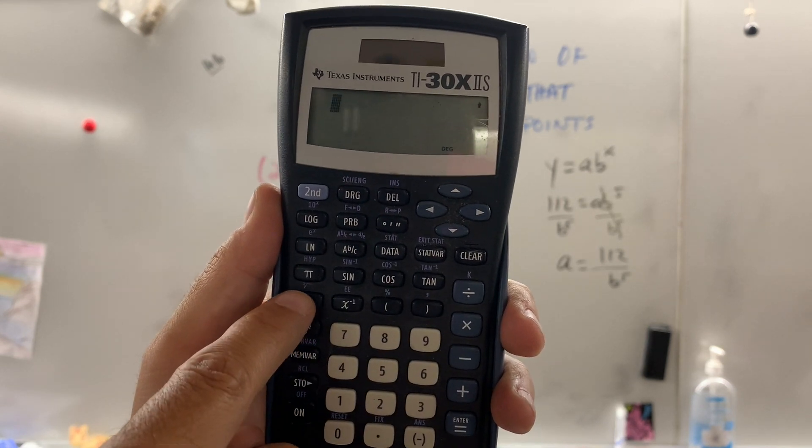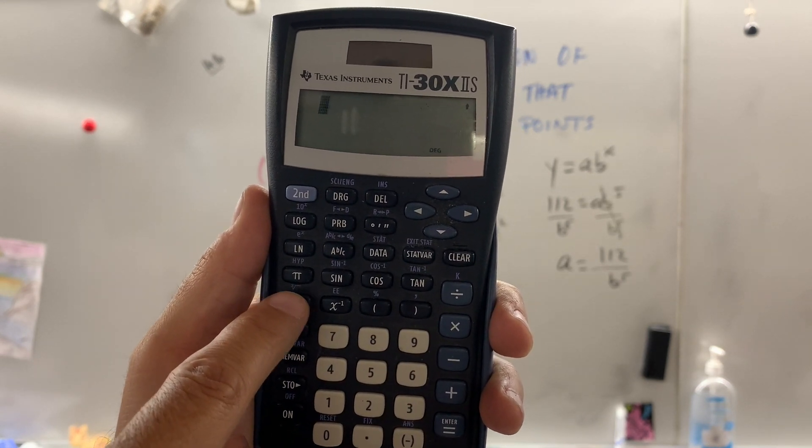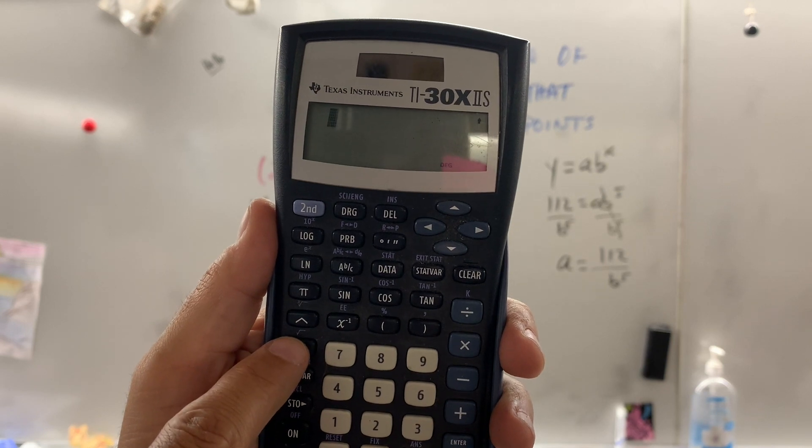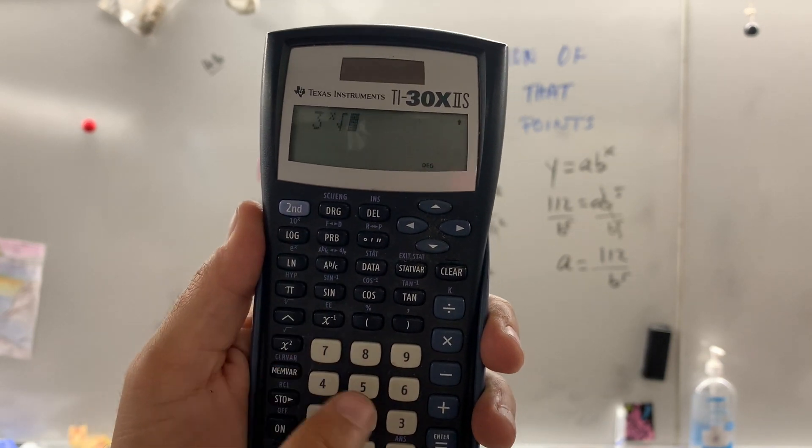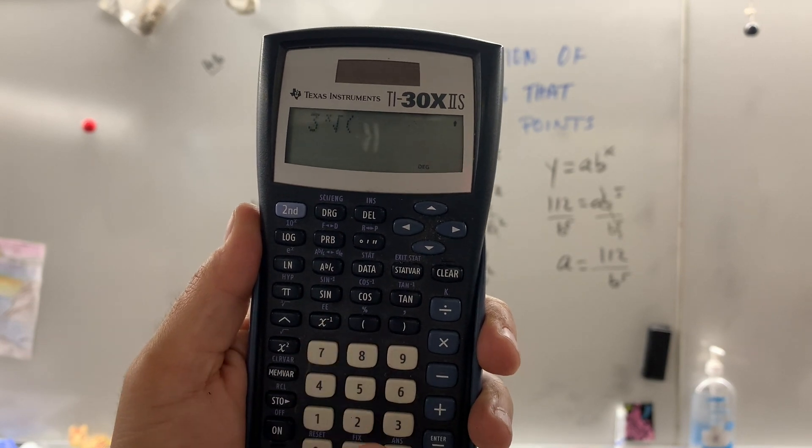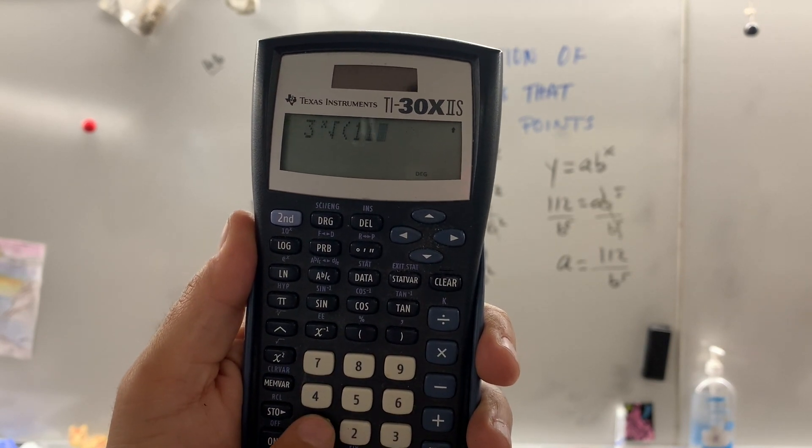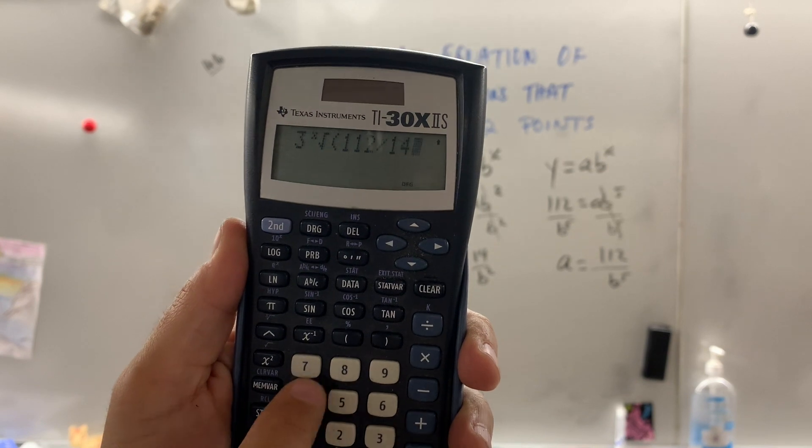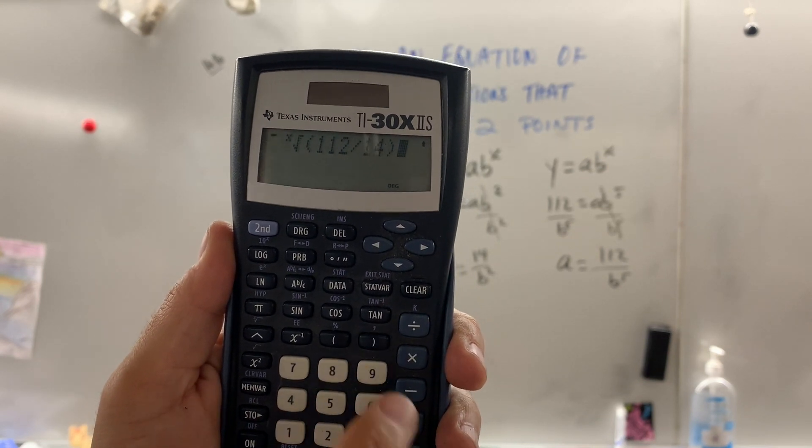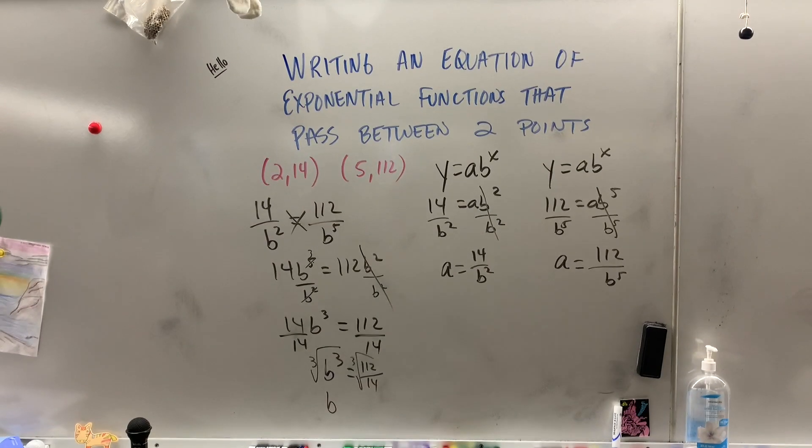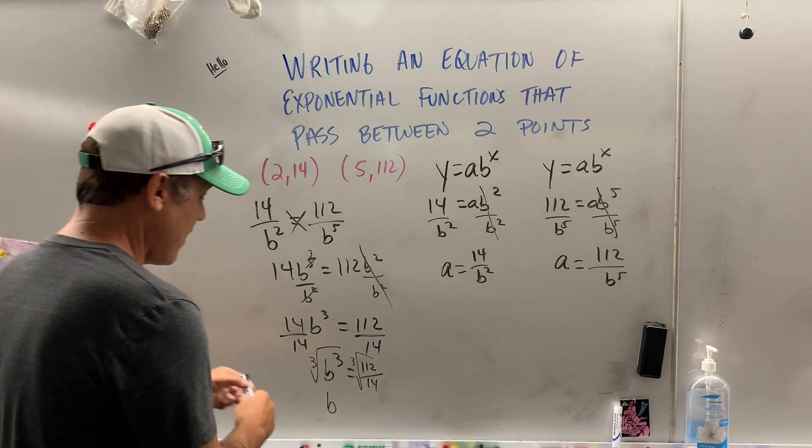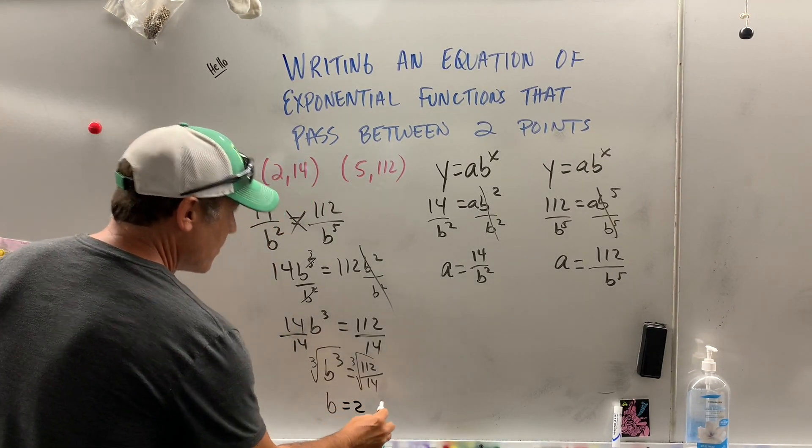So what we're going to do is take the cubed root of 112 over 14. So right here, this will take the third root, fourth root, fifth root, whatever. This is the normal square root button. So to take the cubed root, you've got to hit 3 for cubed, second, then that button, and then you've got to put parentheses because it's 112 divided by 14, just to make sure it takes the cubed root of the whole thing. Let's close the parentheses. Oh, would you look at that, a 2.